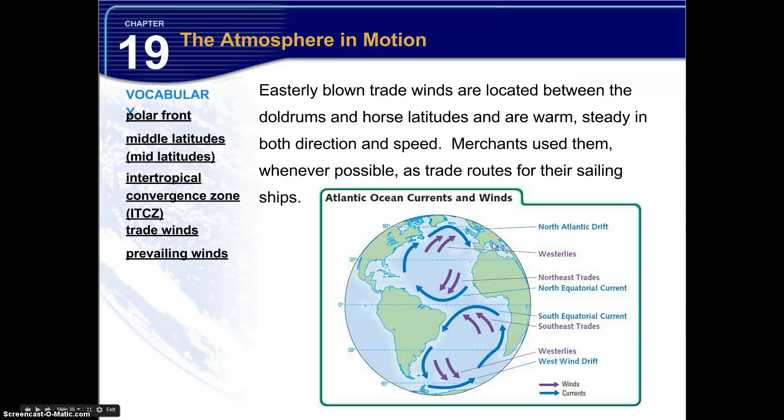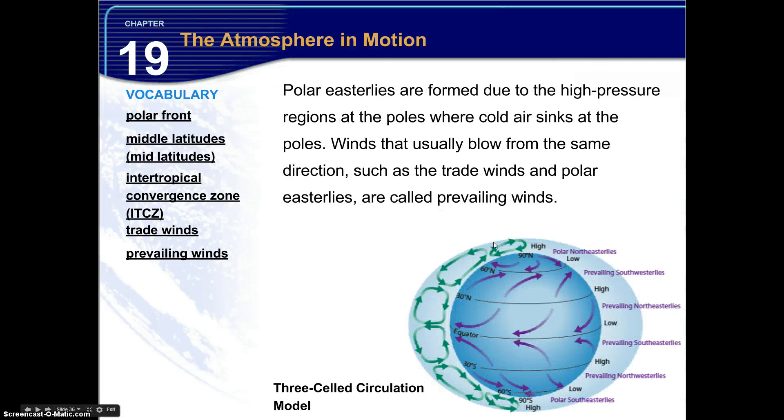Now easterly blown trade winds are located between the doldrums and horse latitudes, and are warm and steady in both direction and speed. Merchants use them whenever possible as trade routes for their sailing ships. Polar easterlies are formed due to the high pressure regions at the poles, where cold air sinks at the poles. Now winds that usually blow from the same direction, such as the trade winds and the polar easterlies, are called prevailing winds. So that gives you a little bit of a background on these terms and where they come from.